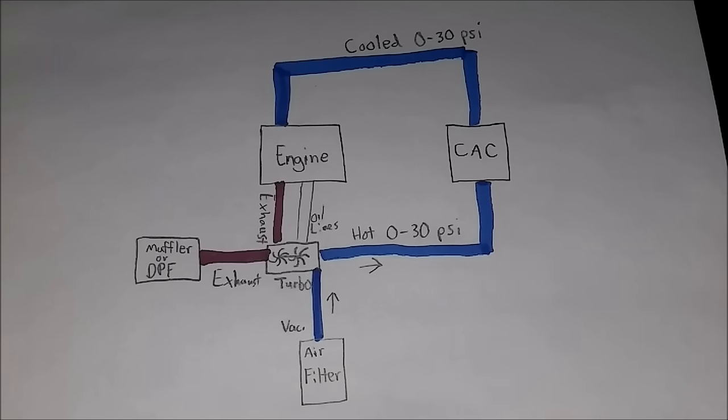Here's an exhaust housing on a VGT turbo. You can see the small vanes — those are what move the exhaust flow away from or towards the exhaust turbine.